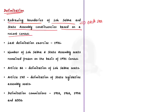Delimitation is the process of redrawing the boundaries of Lok Sabha and state assembly constituencies based on a recent census. This is done to ensure that each seat has an almost equal number of voters. Boundaries need to be redrawn periodically because the population of different areas changes over time.